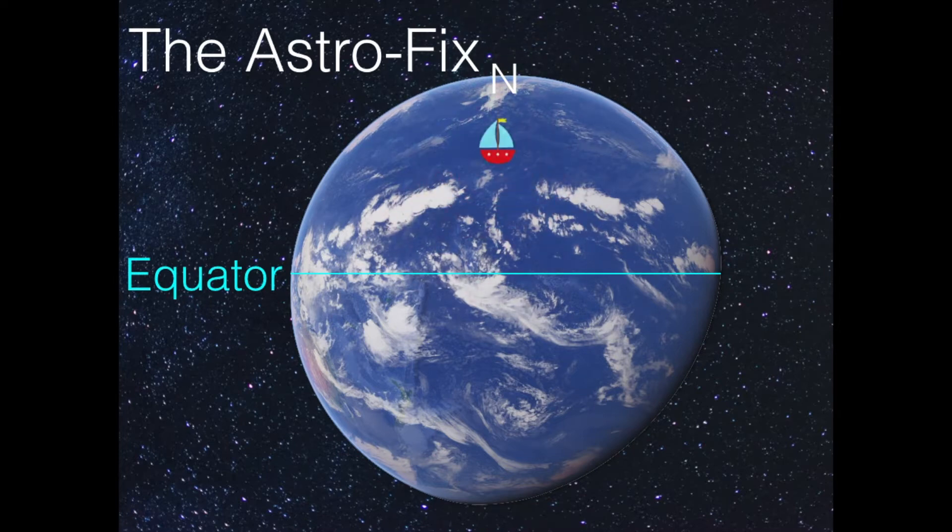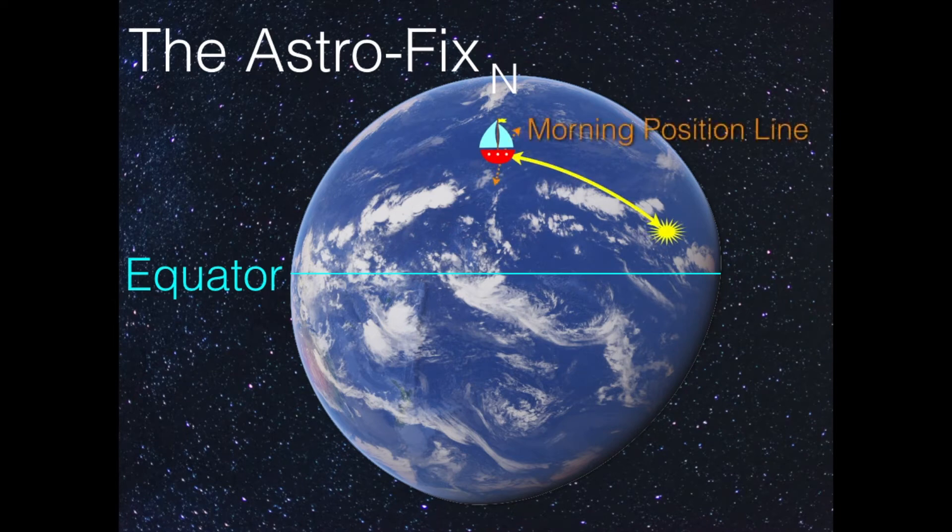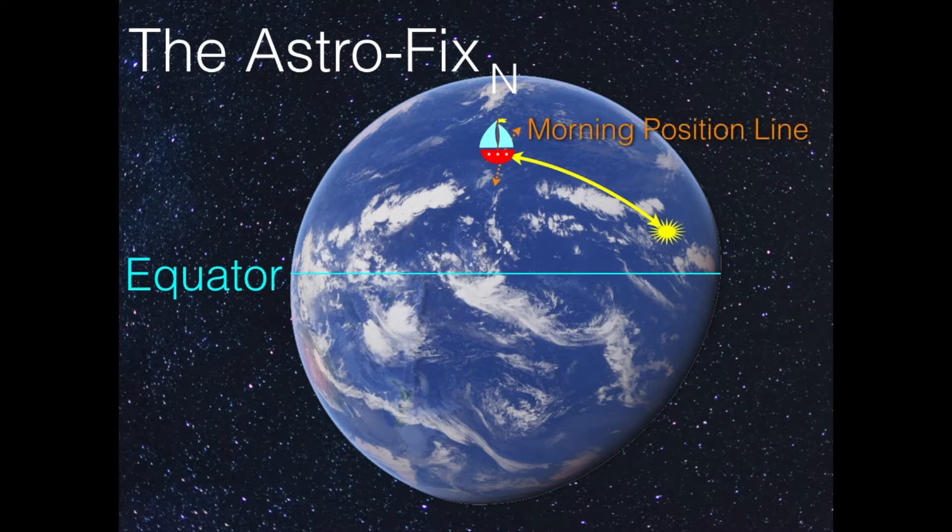So let's go back to our basics. We are here. Our sun is there. You can remember that the zenith distance in yellow is the distance from the sun. And by having the direction to the sun, which is called the azimuth here in yellow, you can get a position line in orange, 90 degrees to the azimuth. Somewhere along that line, that's where you are.